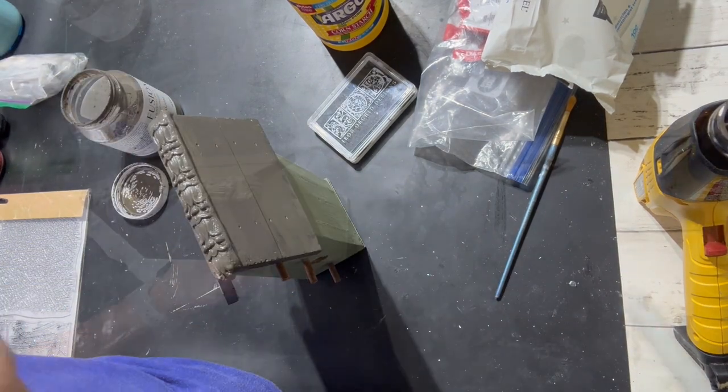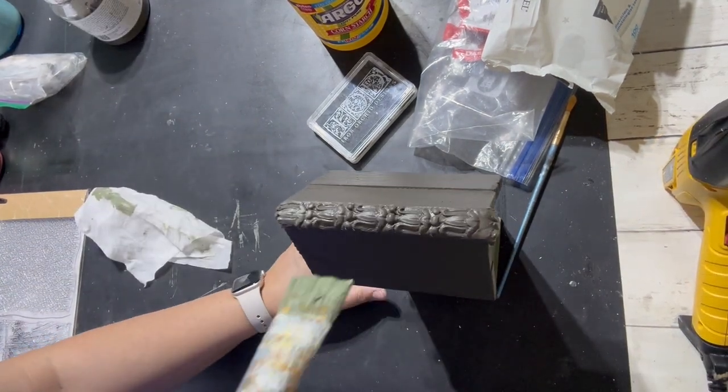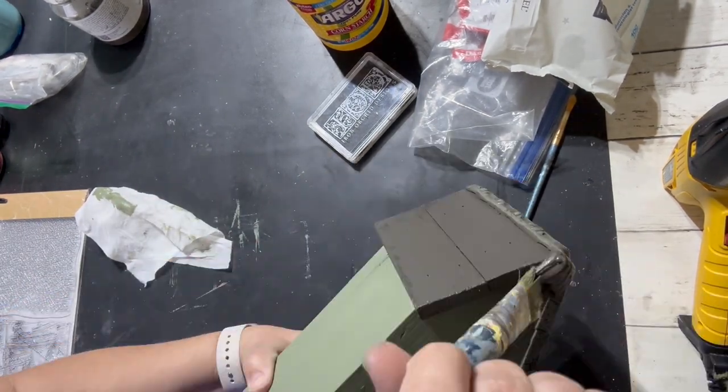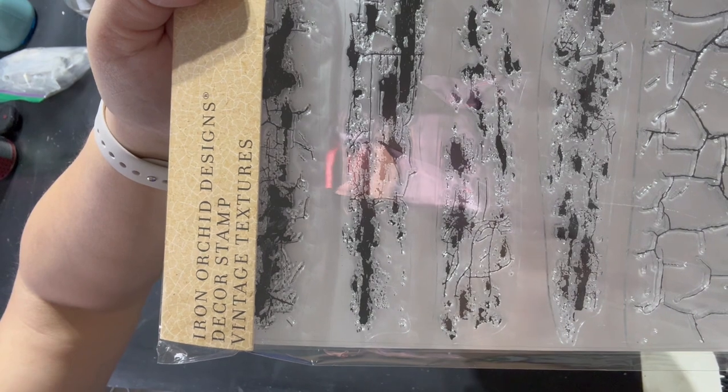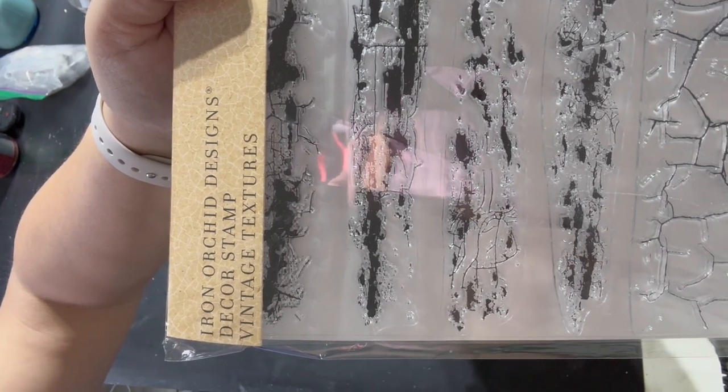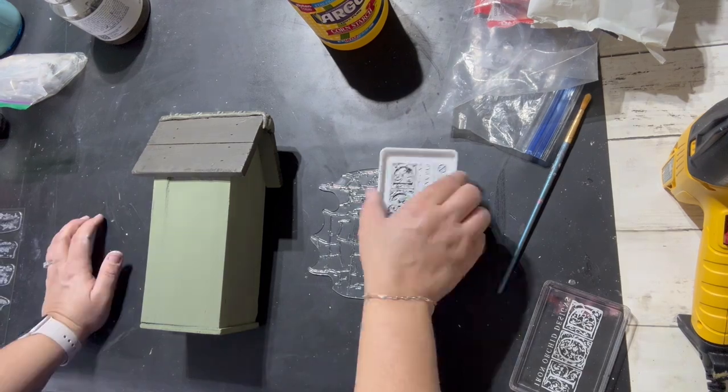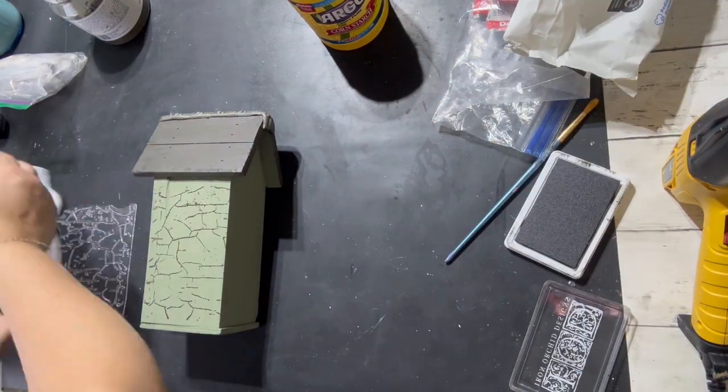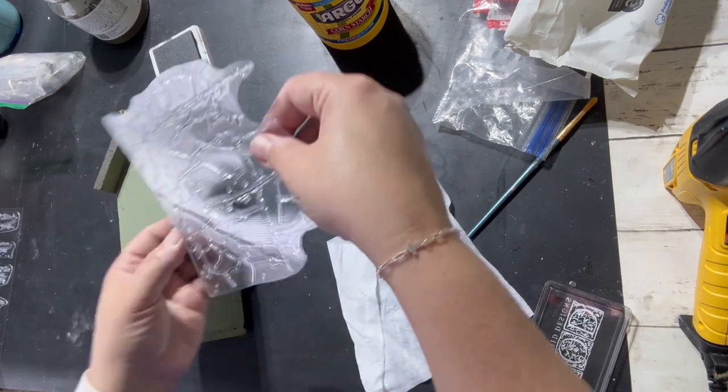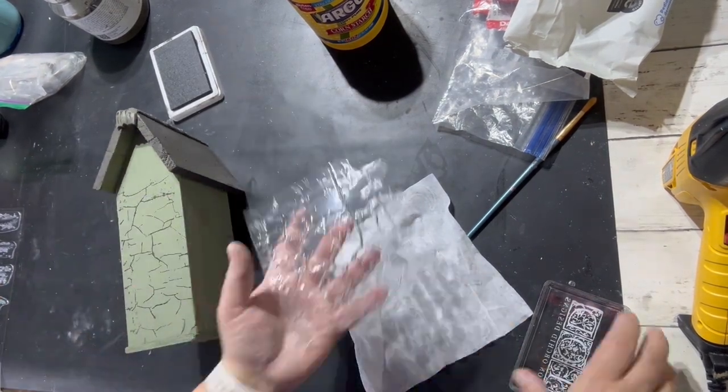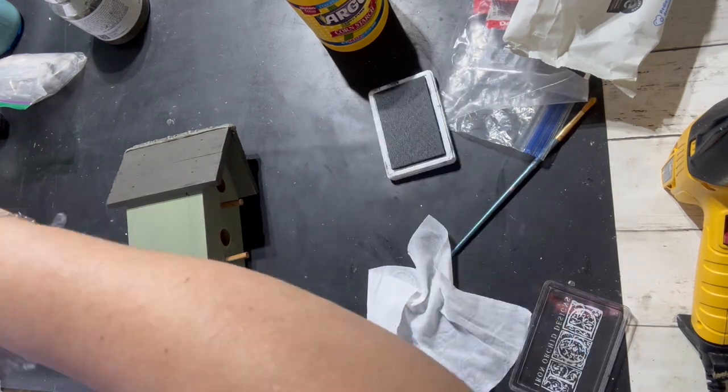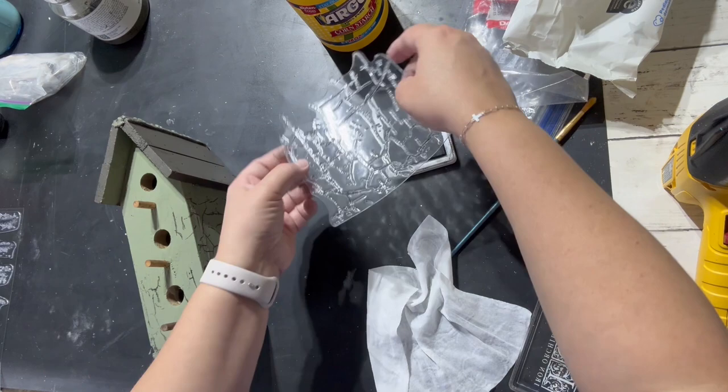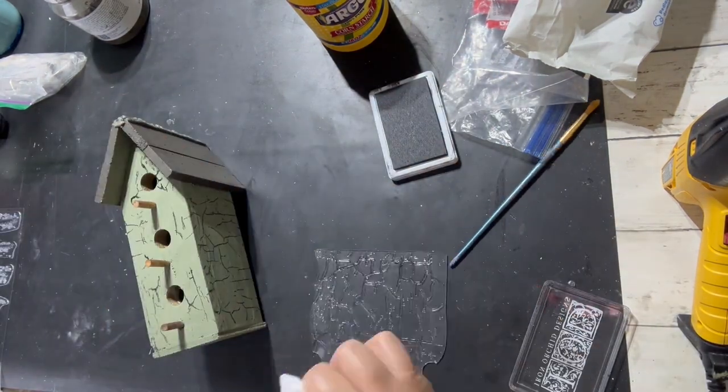After I let that dry, I went back over. I just took what was left on my paintbrush with the sage green and highlighted that mold there. Now we're going to go in with the vintage textures from IOD. It's a stamp, and I'm going to just put a crackling effect all over the birdhouse. That makes it easy, gives it a little distressing, and a little bit more visually pleasing to look at. And then this one's done.